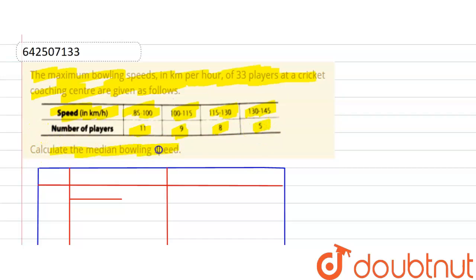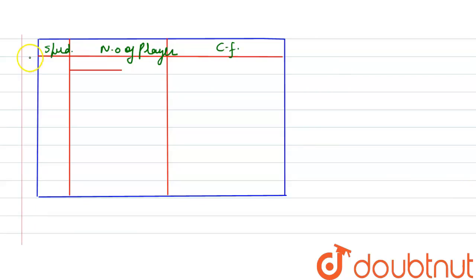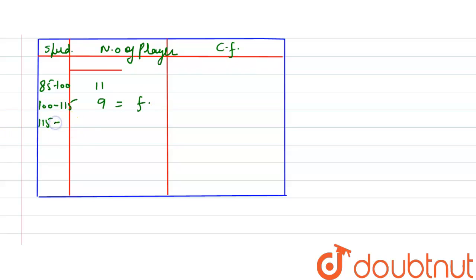We need to calculate the median bowling speed. In the table, the first column is speed, the second is number of players, and the third is cumulative frequency. The speed intervals are 85–100, 100–115, 115–130, and 130–145, with player counts 11, 9, 8, and 5 respectively. The median class will be 100 to 115.